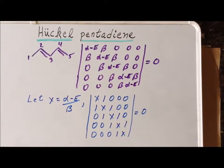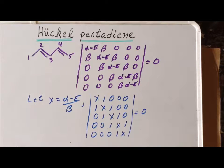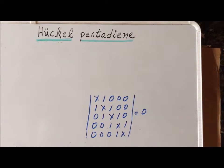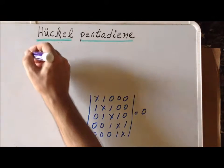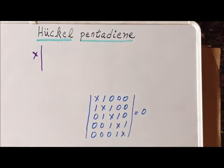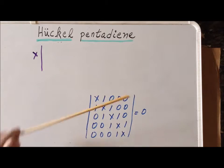Our next step in the solution is to expand this five-by-five determinant as a linear combination of four-by-four determinants. We will proceed using the method of expansion by minors, going down the left column. Our first coefficient is x.